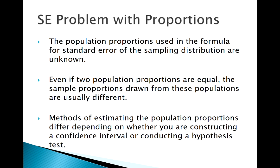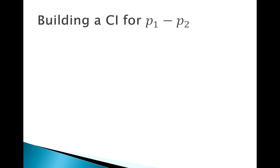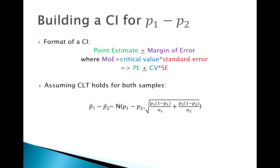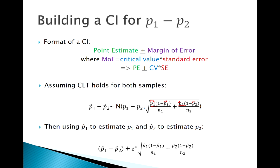For a confidence interval this is pretty straightforward — it's how we handled the one-sample p confidence interval. The general form of a confidence interval, assuming the central limit theorem holds for each sample, uses our sampling distribution. The problem is we don't know p1 or p2, but they're in the formula. For confidence intervals we just use p-hat to estimate p, so we plug in p1-hat for p1 and p2-hat for p2 — those are good estimates of each other.